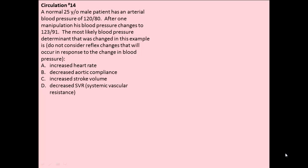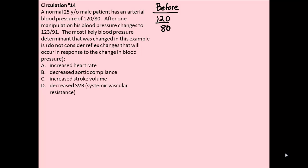We're now looking at number 14 in the circulation problem set. In this problem, we have a patient who had an initial arterial blood pressure of 120 over 80. We then made one manipulation, and his blood pressure changed to 123 over 91.